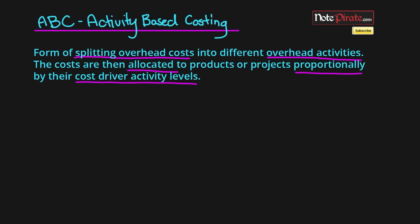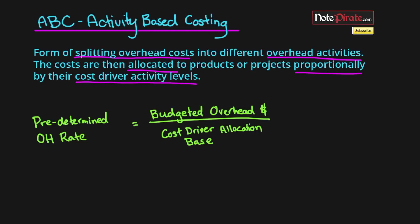Perhaps you remember the predetermined overhead rate that we went over — total budgeted overhead costs divided by the cost driver allocation base gave us the rate. The allocation base was just something like direct labor hours, machining hours, or direct material cost. We used that rate to apply overhead for a certain job, and that worked exceptionally well if we had a bunch of identical products.